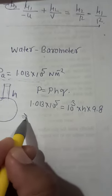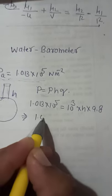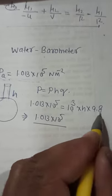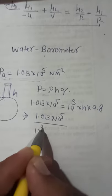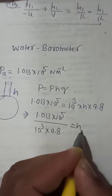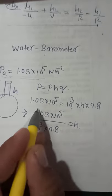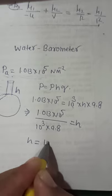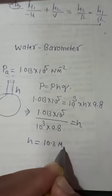So if we calculate this value, 1.013 into 10 to the power 5. Now these values will come in the denominator. So 10 to the power 3 and 9.8 equals to H. So if we calculate the entire value, the value of H is around 10.3 meters.